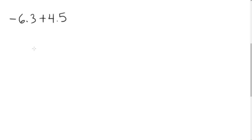Let's look at subtraction of decimals. We're going to use the same rules we use for subtraction of integers. For example, negative 6.3 plus 4.5: I have opposite signs, so I take the difference of the absolute values and bring down the sign of the larger number. The larger is 6.3, so I bring down the negative. The difference is 1.8, so the answer is negative 1.8.